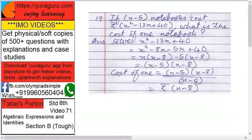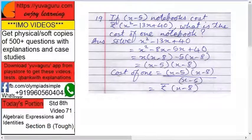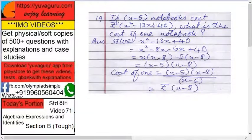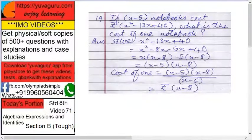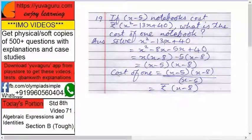Next: if (x-5) notebooks cost rupees x²-13x+40, what is the cost of one notebook? It's simple — like if 10 notebooks cost 100 rupees, each costs 100 divided by 10. Same logic: we need to factor x²-13x+40 so that (x-5) is one of the factors.